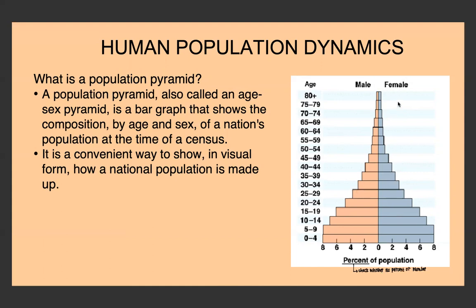For example, to find how many females are over the age of 60 in South Africa, you look at all age groups from 60–64 upward on the female side and add up the percentages. Let's say the values add up to about 3%, so females over the age of 60 make up approximately 3% of South Africa's population — that's how you read it off.